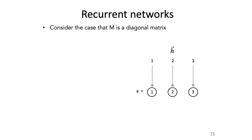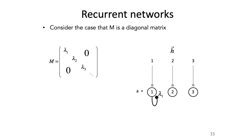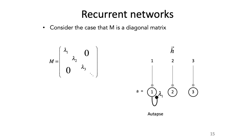Let's take the simplest case of a recurrent network. The simplest case is where the recurrent connections within this layer are given by a diagonal weight matrix. What does that correspond to? This means each neuron makes a connection onto itself with a synapse of weight lambda_1. That kind of recurrent connection of a neuron onto itself is called an autapse — like an autosynapse — and we'll put one on each neuron in our recurrent layer.